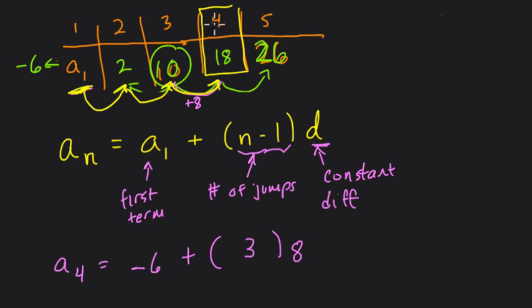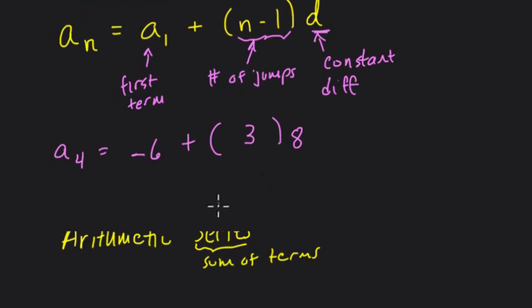In fact, the number of jumps it takes to reach any term is always 1 less than that term. For example, if I wanted to reach the fifth term, it would take n minus 1, or 5 minus 1, 4 jumps to reach it. So that's why I think of this as a number of jumps. And this process works.